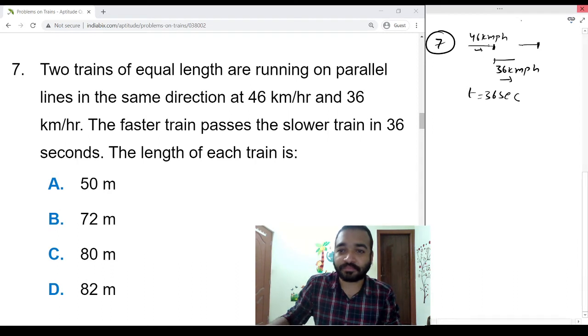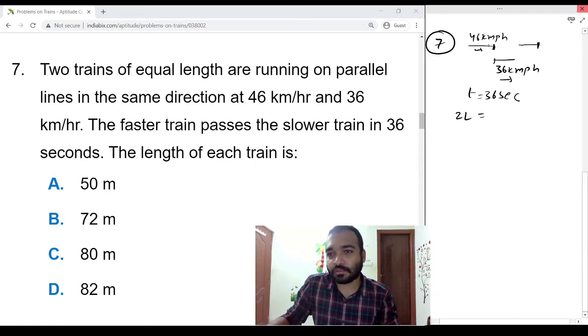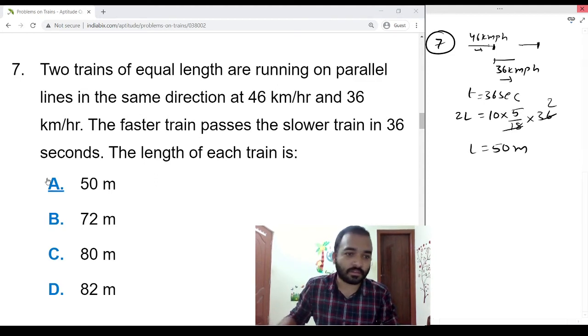So 2L equals speed. As both the trains are moving in the same direction, speed is 46 minus 36, that is equal to 10, convert into meters per second, times 36. So L is equal to 50 meters, option A.